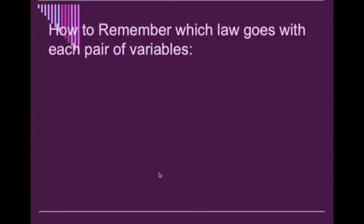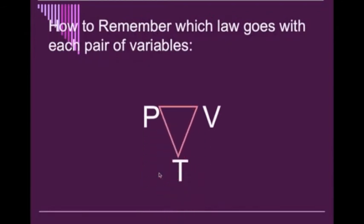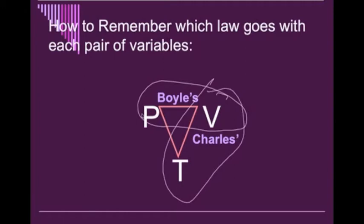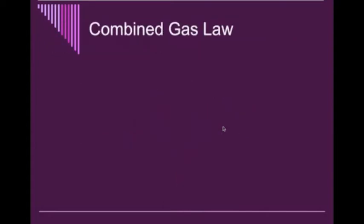Now, one way that we can remember this is by using our triangle. So we know that if we have our triangle PVT, Boyle's going to be on top where we have pressure and volume and temperature is held constant. Charles will be on the right, where we have volume and temperature and pressure is held constant. Gay-Lussac's, we will have pressure and temperature with our volume on the right, which is constant. Just a simple way we can remember it.